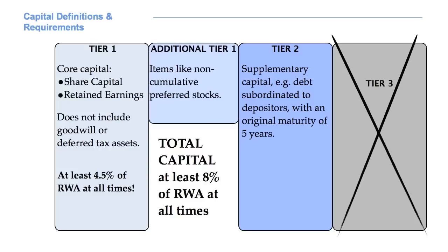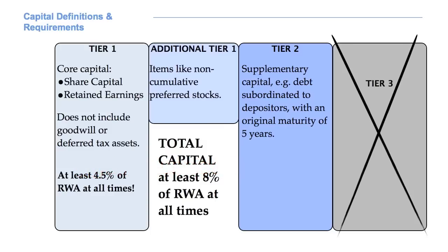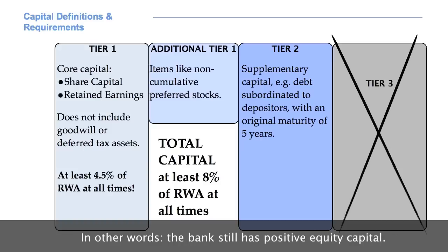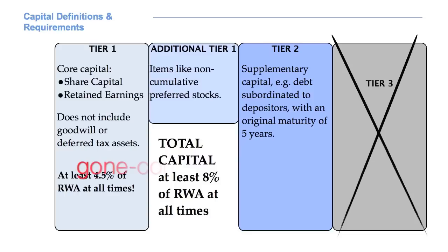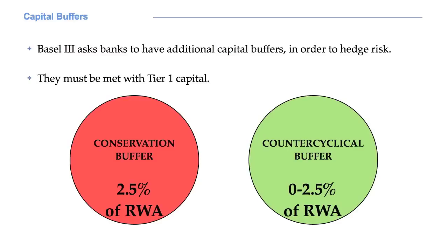Imagine that a bank experiences a loss. The bank is said to be going concern if the loss is entirely covered by Tier 1 capital. If the loss also affects Tier 2 capital, then the bank is said to be gone concern. Capital buffers are additional amounts of capital that banks are required to maintain under Basel 3. They are the conservation buffer and the counter-cyclical buffer. Both buffers must be met with Tier 1 capital.